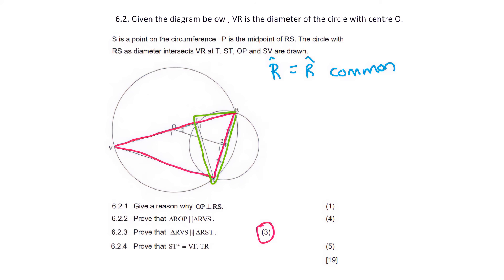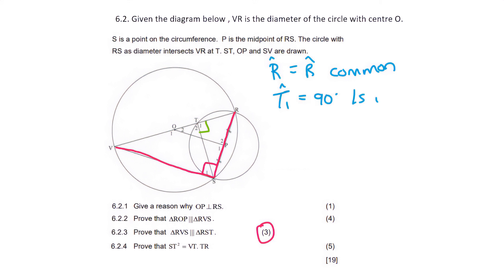In the pink triangle we know the whole angle is already 90 degrees. Now in the smaller triangle, remember they told us RS is a diameter, so the corner angle T1 must be 90 degrees — that's angles in a semicircle, but now working in the smaller circle. So T1 equals 90 degrees, because of angles in semicircle.